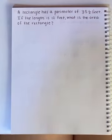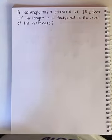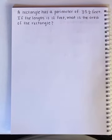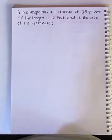Here is our second problem. This one says a rectangle has a perimeter of 35 and a half feet. If the length is 12 feet, what is the area of the rectangle?